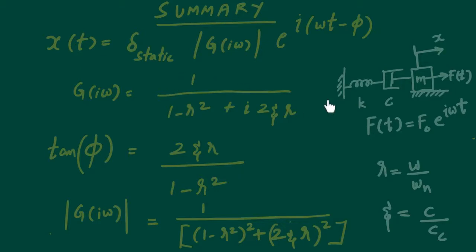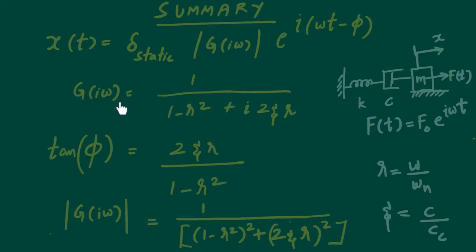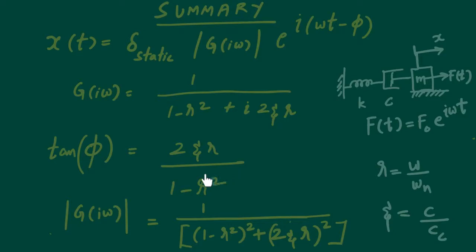The final expression we got for the response of this particular mass x is: delta-static times the modulus of G(iω). G(iω) is a complex term called the frequency response, which holds a lot of importance that we will discuss in a moment. There is also a definite phase difference — the amount by which the response is lagging — and it is completely known as a function of these known parameters.